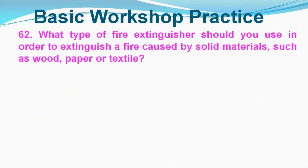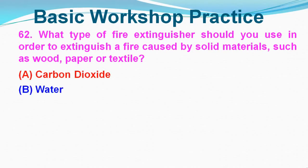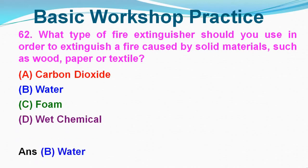Question No. 62: What type of fire extinguisher should you use to extinguish a fire caused by solid materials such as wood, paper, or textile? Option A: Carbon Dioxide, Option B: Water, Option C: Foam, Option D: Wet Chemical. Correct answer is Option B, Water.